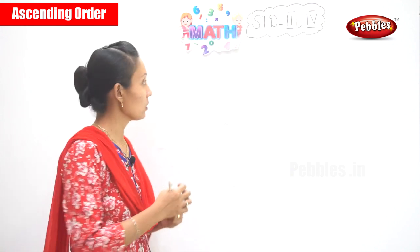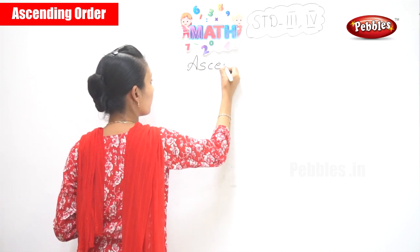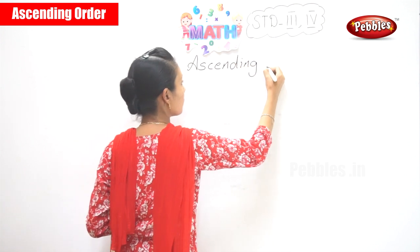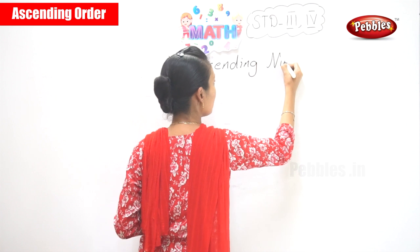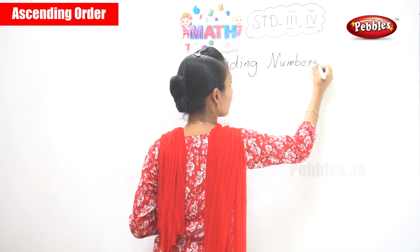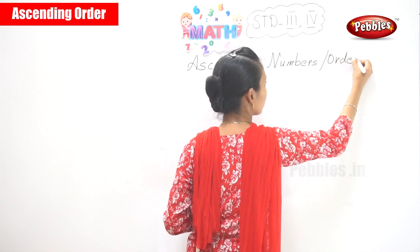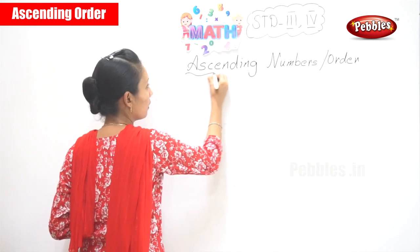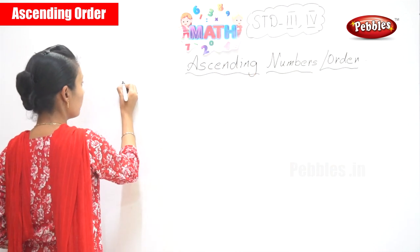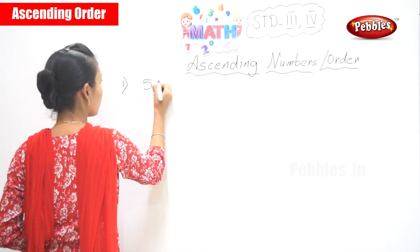So children, from these numbers you need to write the smaller number to the greater number. We are going to learn ascending numbers, or you can say ascending order. This is how you write ascending order — your first one, you will start with a smaller number.